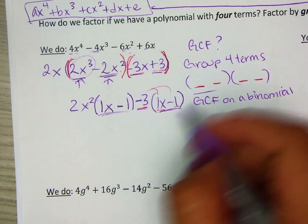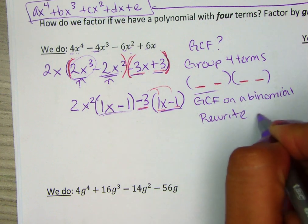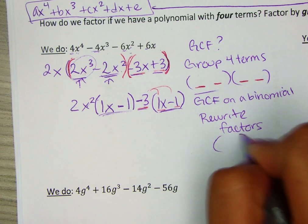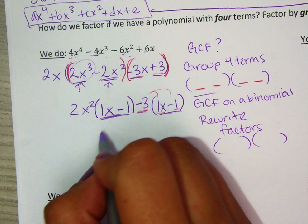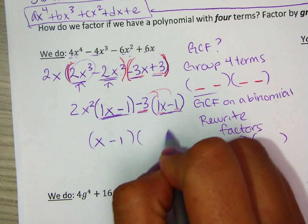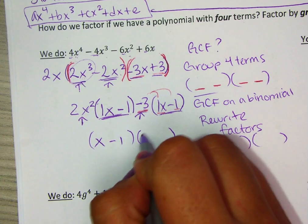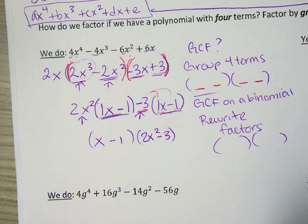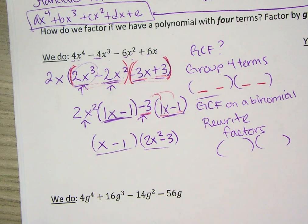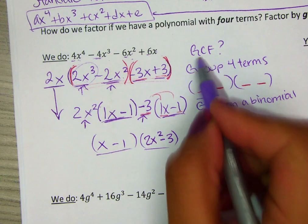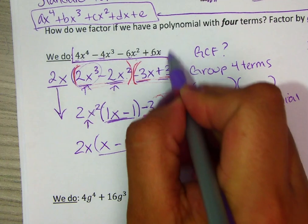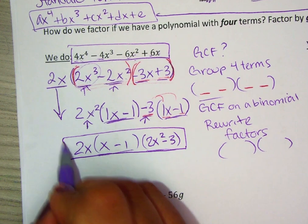Now we're going to rewrite the binomial that's repeated, or just rewrite the factors. The one that's repeated becomes one factor - we can write x minus 1, since 1 is not necessary. The other one is these two that are separate, so we have 2x² minus 3. These two binomials come from these four terms. We still have the first GCF that we took out, greatest common factor, and we just write it in the front.